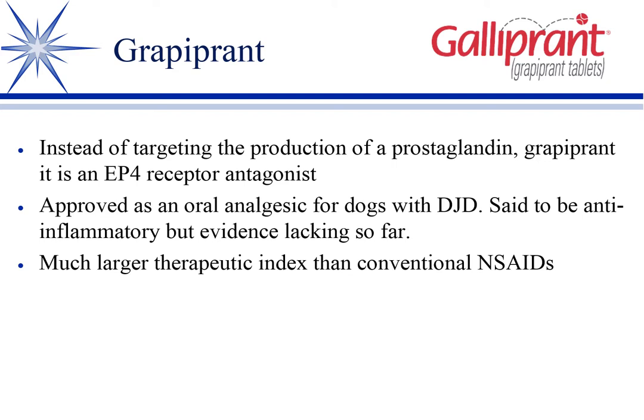The key point is what the normal role of prostaglandin E2 does. Grapiprant targets just the EP4 receptor and will be approved for pain in degenerative joint disease. It's said to be anti-inflammatory. It's similar to Apoquel in the sense that it targets at a much more refined level — you're not wiping out cyclooxygenase, so you're maintaining PGE2's normal homeostatic mechanisms, giving a much better therapeutic index and fewer side effects than regular NSAIDs.